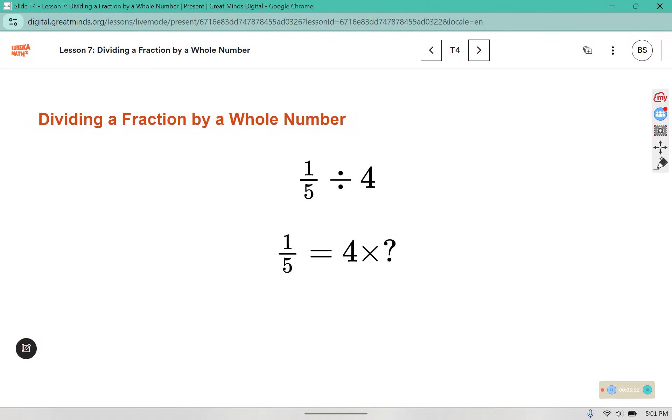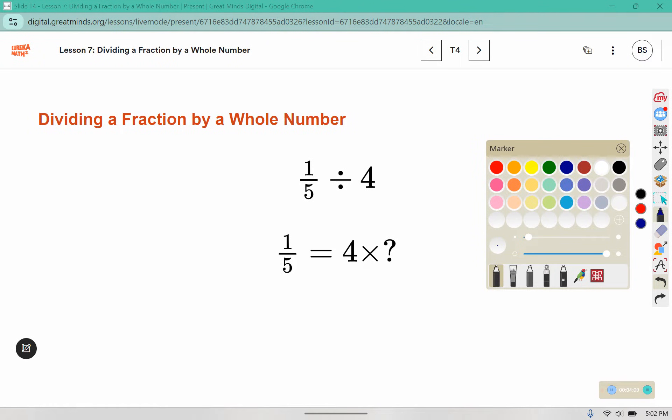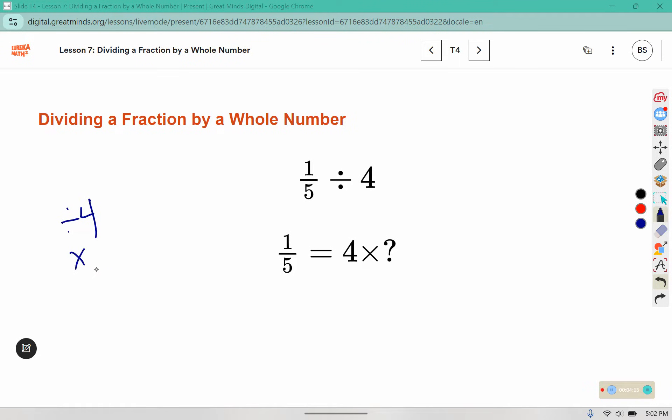So we see here multiplying 4 by 1/20 would give us 1/5. That would make it 4/20 and we could reduce to 1/5. Or you can think of it as 1/5 divided by 4 is the same as multiplying by which number? It would be the same as multiplying by 1/4.